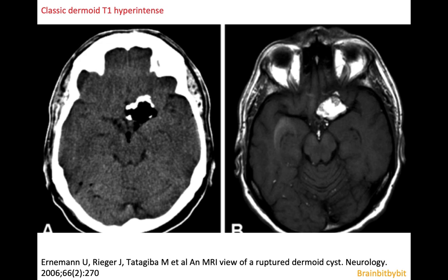The sebaceous glands form the content of the cyst, which is very fatty, and this leads to the high signal on T1 and the low density on CT. The content is fatty but not fat, so it's not a lipoma. The wall of the cyst often contains calcifications, and typically dermoid cysts do not enhance.